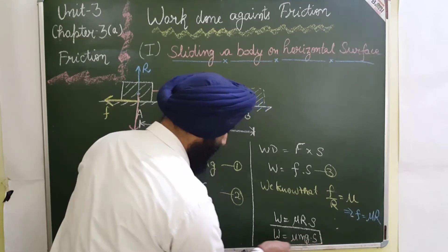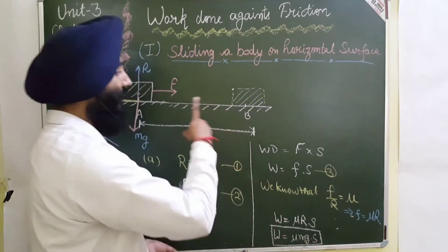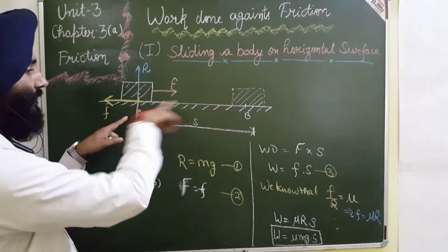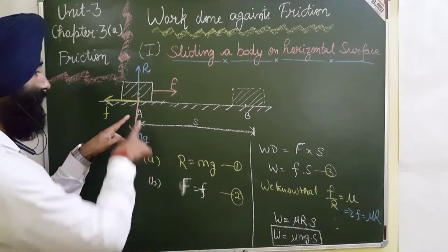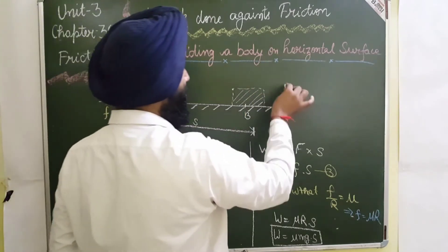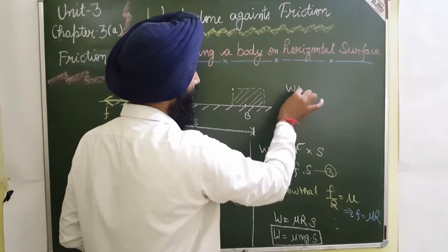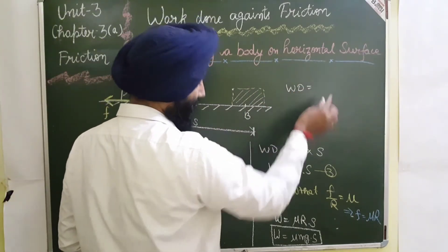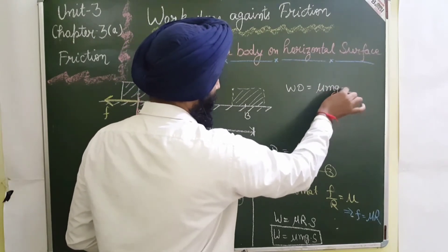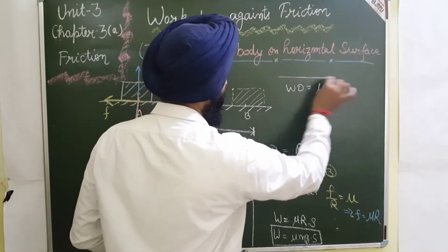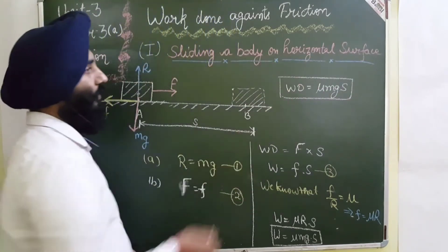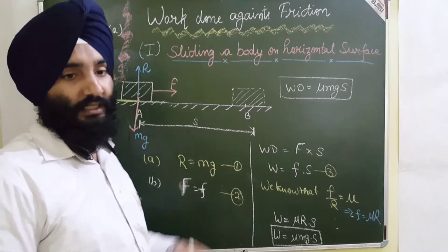This is the final value when we want to move a body on a horizontal level surface from point A to point B. The value of work done equals μMg × displacement S. This is the value for the case of a horizontal surface. Now we have to discuss the inclined surface — when the body is moving upward and when it is coming down.